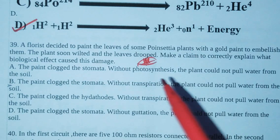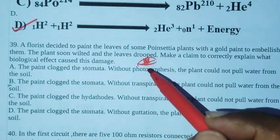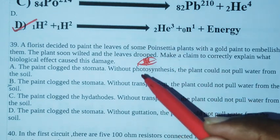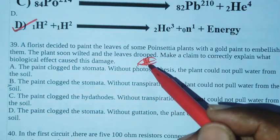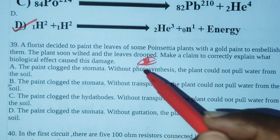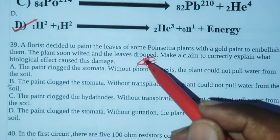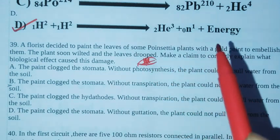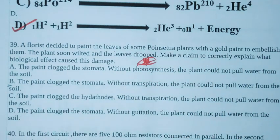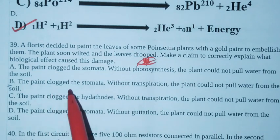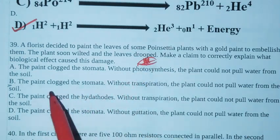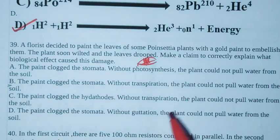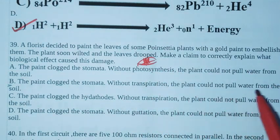The gold paint will close the stomata. So transpiration, loss of water through the stomata, will not happen. Water loss will not occur, so water supply will not be maintained. Therefore the leaves will be victim. So option B is the right answer. The paint clogged the stomata, and without transpiration the plant could not pull water from the soil.